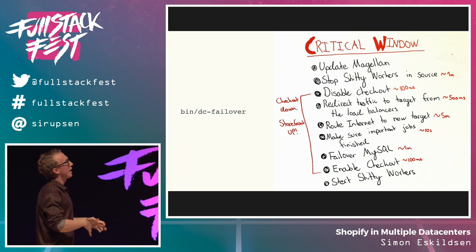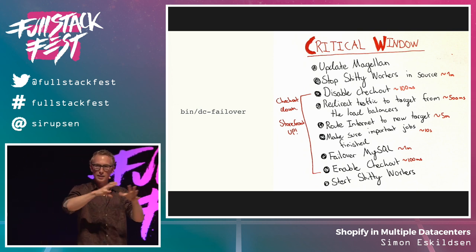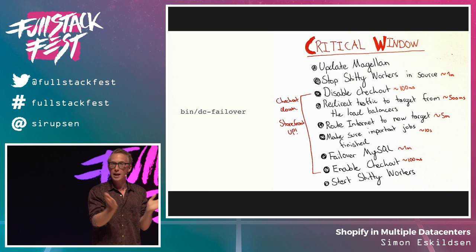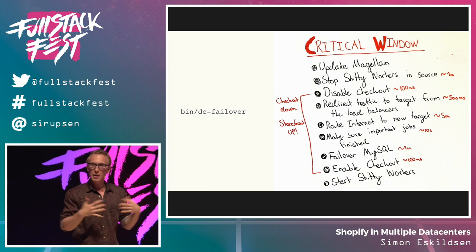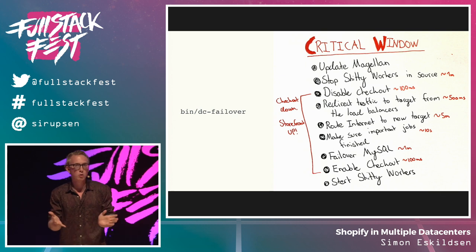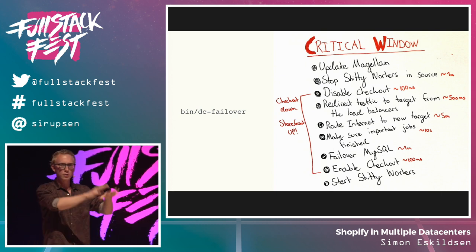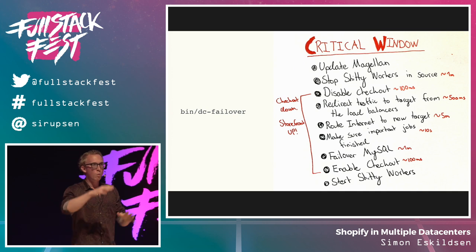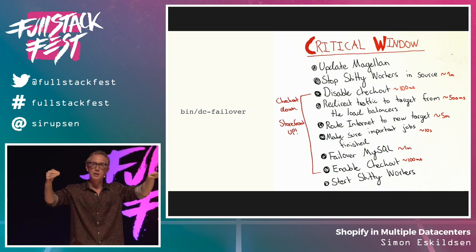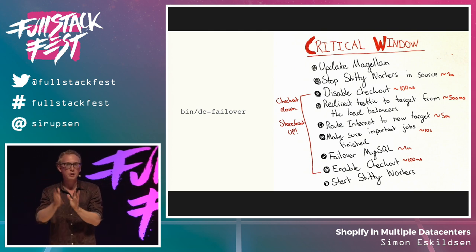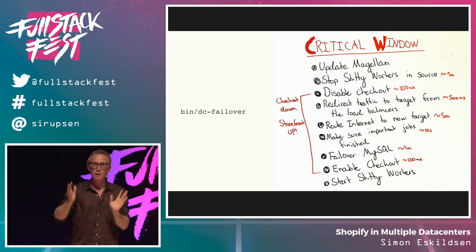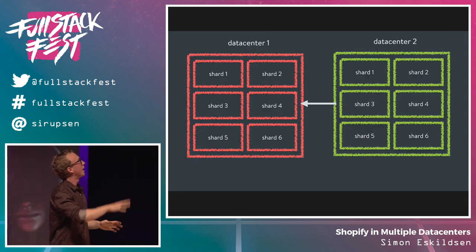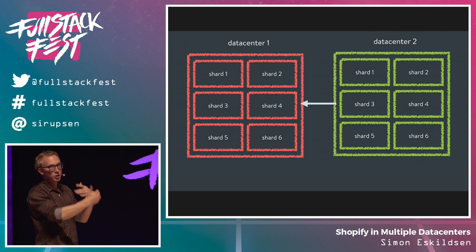The failover script has a few steps. It updates a service discovery layer saying the data center is going to move. Then it takes checkout down — if you're going through a checkout during the move, it shows an error saying please come back later. If you go to a store during that time, since the store is read-only, that's completely fine — most stores don't even appear to be down unless you try to perform a write. Then we stop everything in the old data center, make sure replication is caught up in the other, start everything back up, and tune our load balancers so traffic is proxied to the new data center while we update our internet routes to announce IPs from the new data center. This takes very little downtime, and then data center 2 is primary, replicating in the other direction.